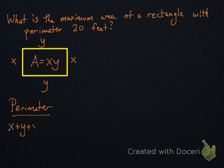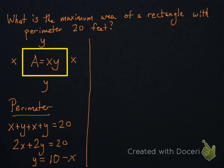Now, what's the perimeter? You just add up the sides, x plus y plus x plus y. Since that has to equal 20, we can actually solve for one of the variables. We can solve for y, and we get that it's 10 minus x.